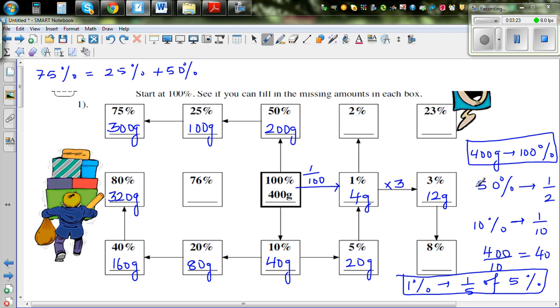What is left? You've got 76%, 2%. So from 1% you can find 2% by timesing it by 2, which is 8 grams.